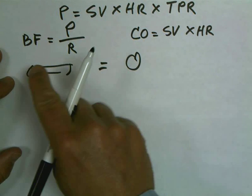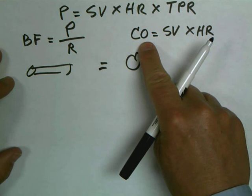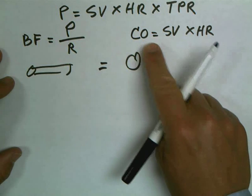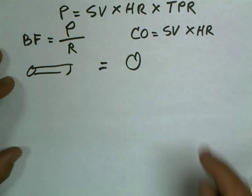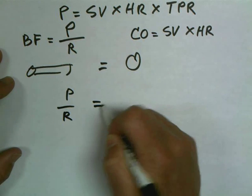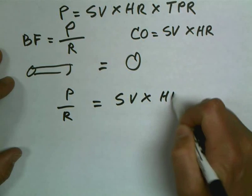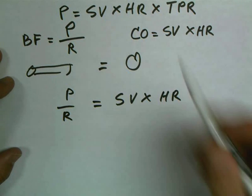Since we know that the blood flow through the blood vessels has to equal the blood flow through the heart, we can just write it out just like that. We can say that pressure divided by resistance is equal to stroke volume times the heart rate, because they're just equal to each other.